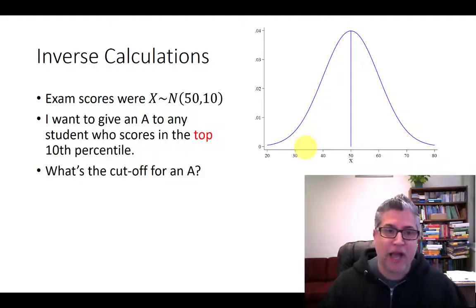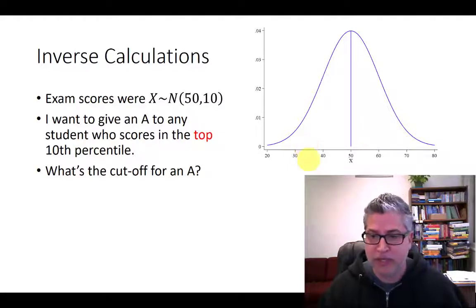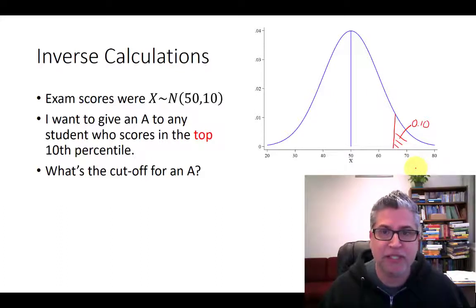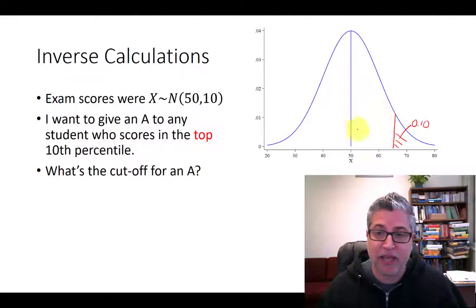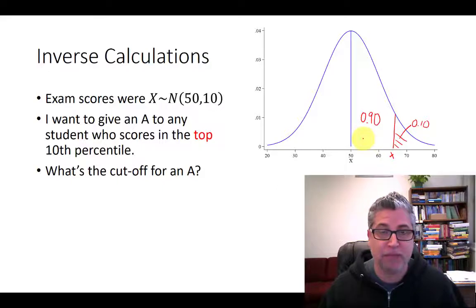So let's say that I want to give an A to the top 10th percentile. So now I've got something like here. And so this area is 10 percent. Now remember that the problem with Excel is it doesn't do well with greater than probabilities, areas to the right of a particular number. It only likes to calculate areas to the left. So I need to rephrase this as what value of X would give me an area of 90 percent.